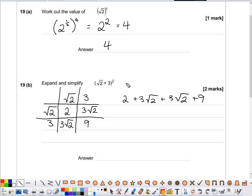To simplify this, we gather everything that's the same. So our two whole numbers can be added together. 2 add 9 is 11, and 3 root 2, add 3 root 2, would give us 6 root 2.